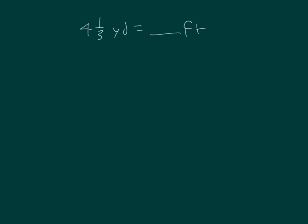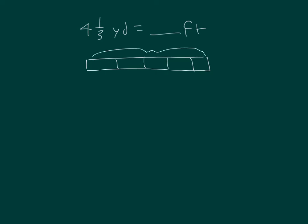Let's draw a tape diagram to help us solve this problem. We have one, two, three, four, and then one-third — so the whole thing is four and a third.